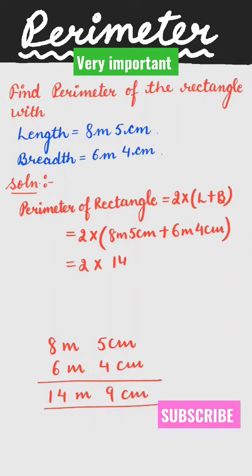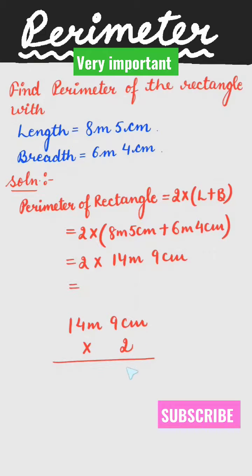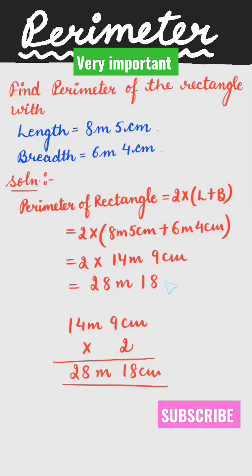Now we will multiply this by 2: 2 nines are 18 centimeter, 2 into 14 is 28 meter. So our answer is 28 meter 18 centimeter.